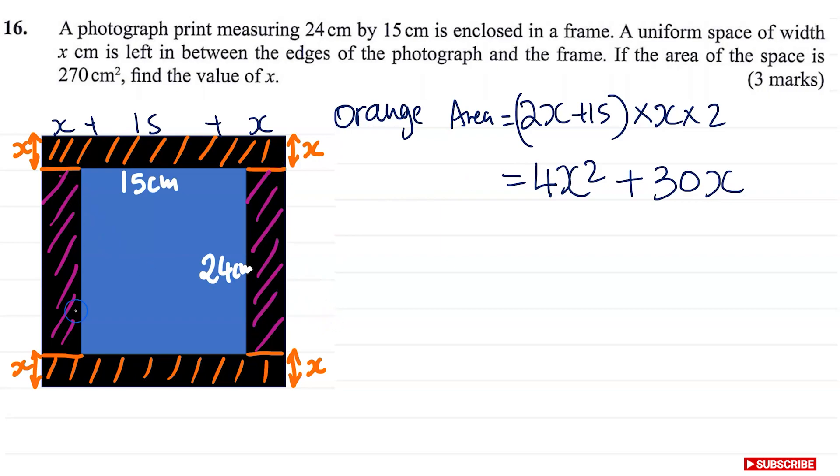And now let's find the purple area. So the purple area, that's going to be equal to the length of this photograph, 24 times this width because it's just that length times the width which we know is x. Again, we have two of them, one on each side. So we need to double this. And this is going to be equal to 24 times 2, 48x.